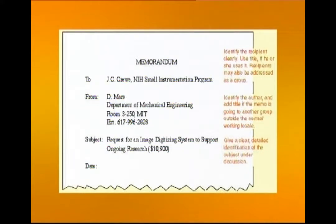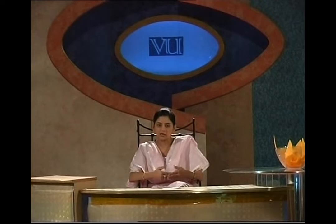The heading sections include: 'To' — the subject line which gives what the memo is about — and the date. In the 'To' section, the writer will identify the recipient clearly using titles if the recipient uses them, such as Mr., Mrs., Ms., Doctor, Professor, etc. The recipients may be one person, more than one person, or a group of people. You will not give a postal address on the memo because the memo is an internal piece of communication assumed to be going to people within the same office.